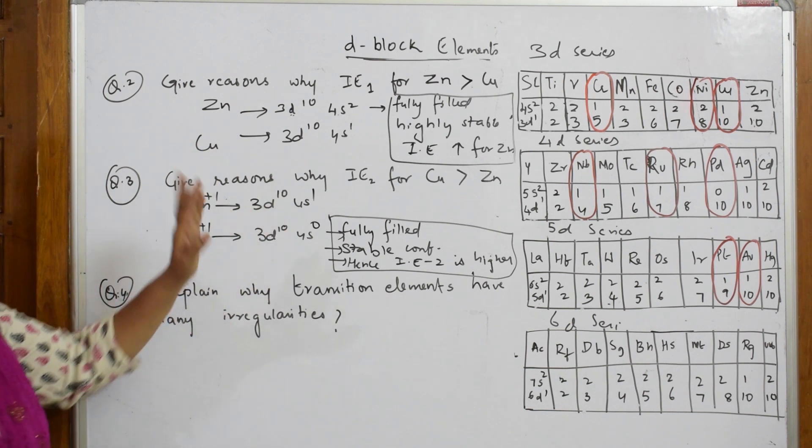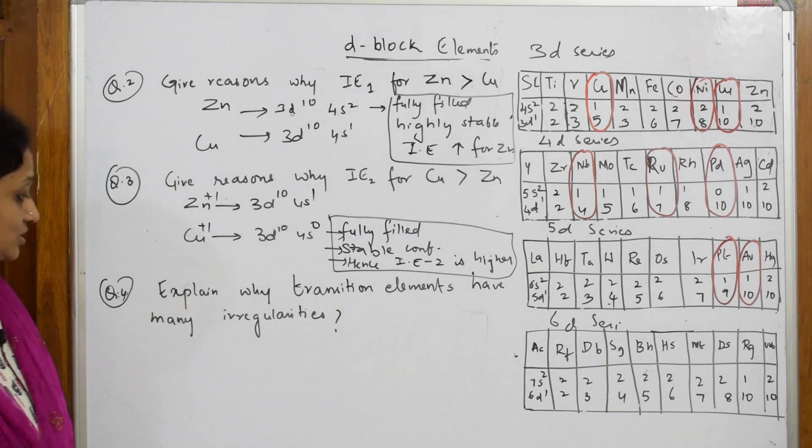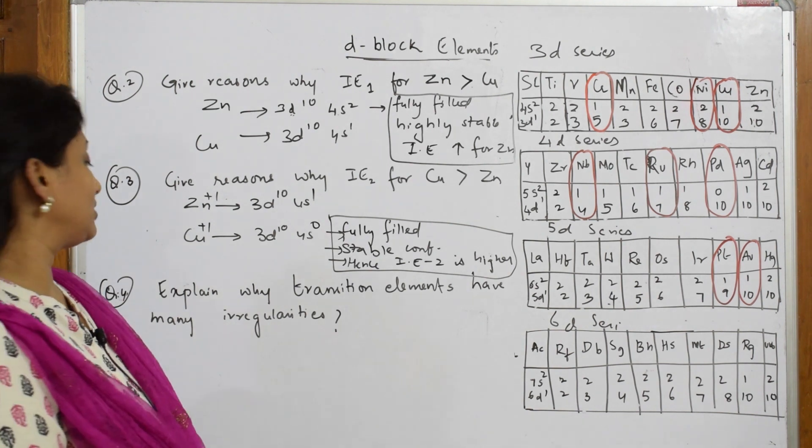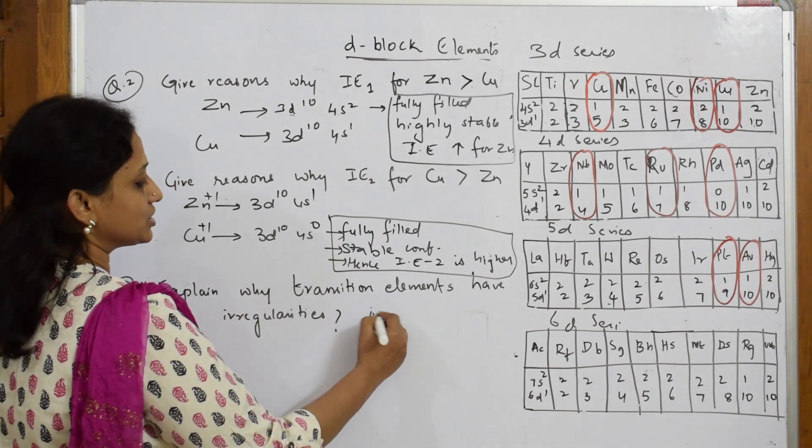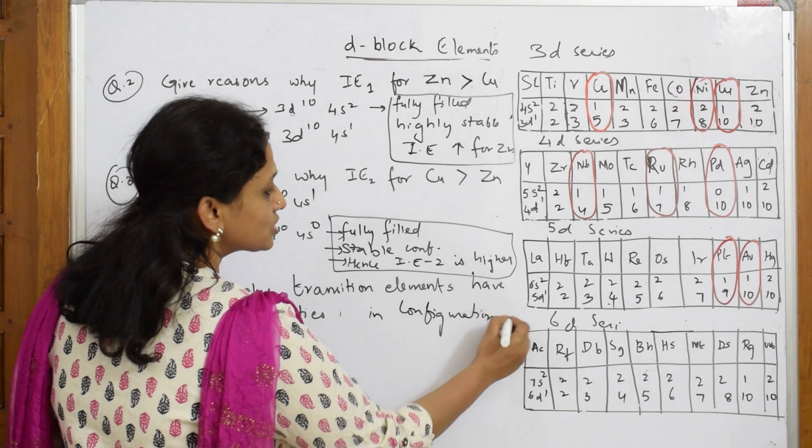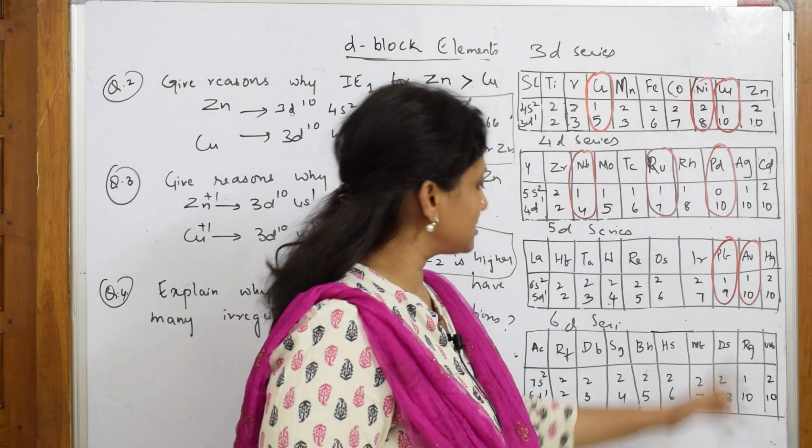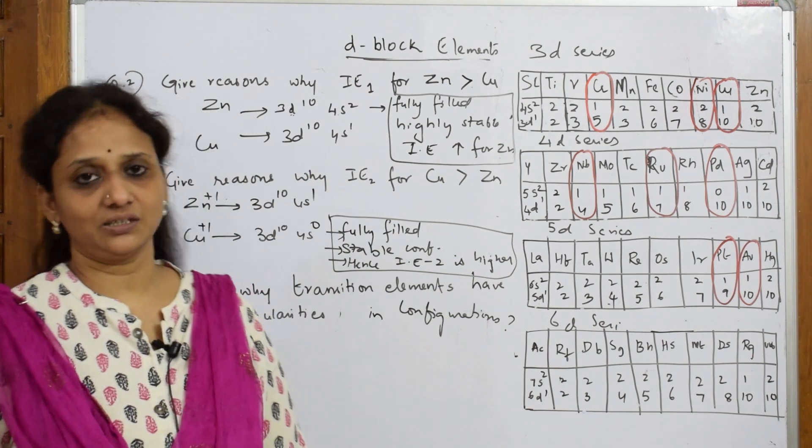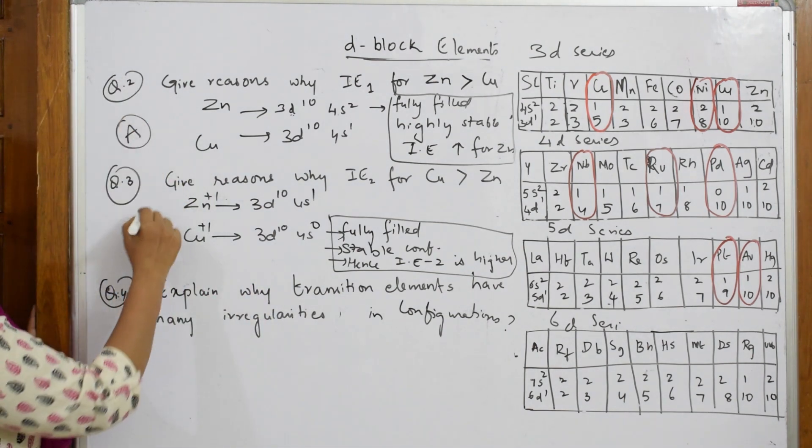Both of these things finished. Now let me explain why transition elements have many irregularities. Explain why transition elements have many irregularities in configuration. That is your question in configuration. Why is it so? Now let us see. I have marked so many irregularities here - this one, again this, this, this, this. Why is that irregularity?